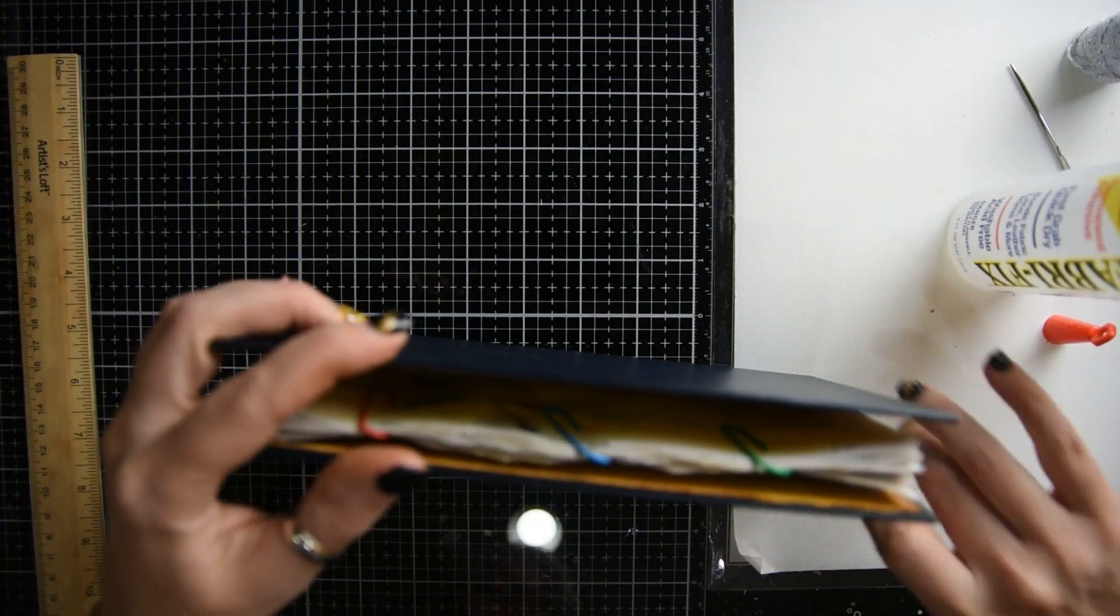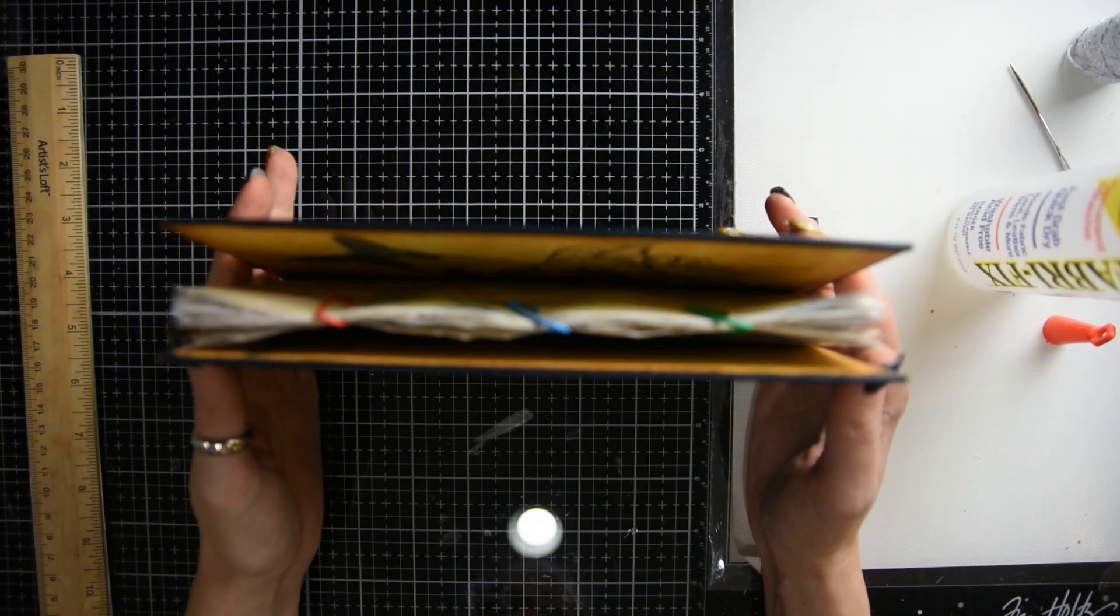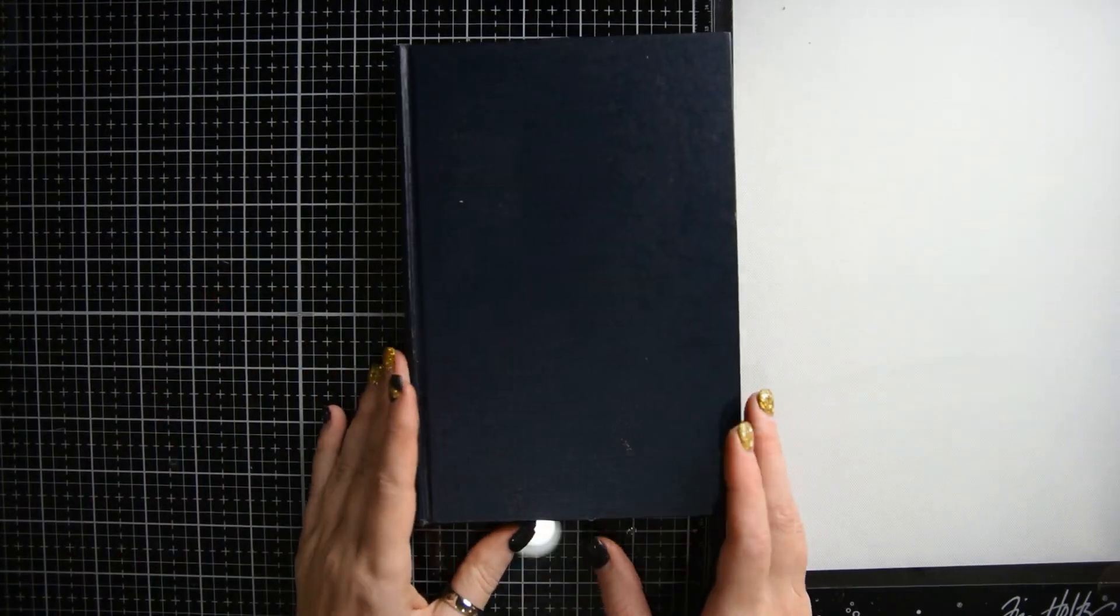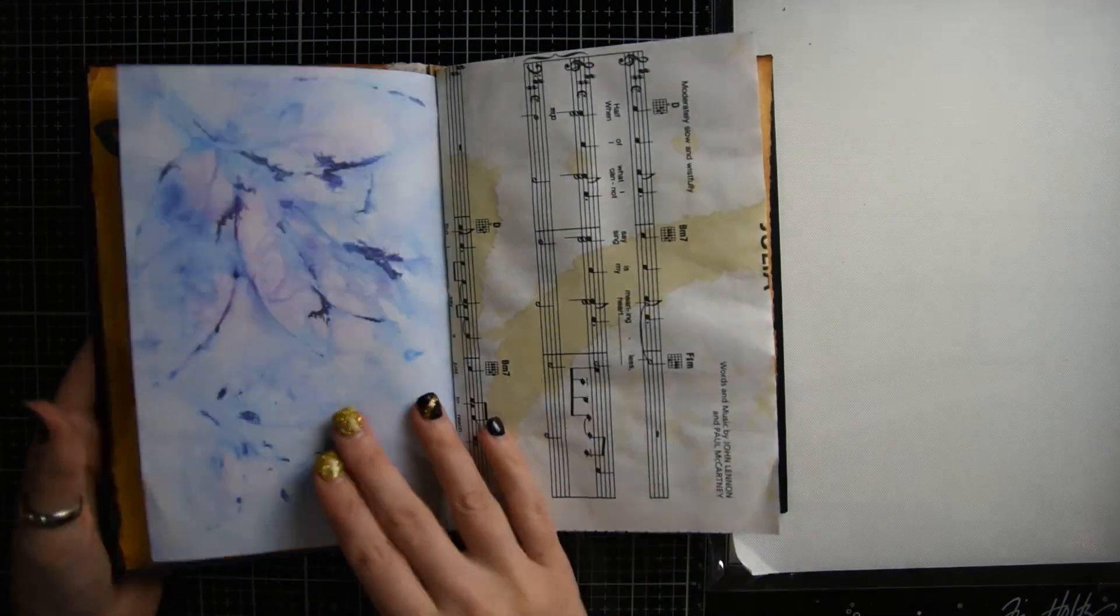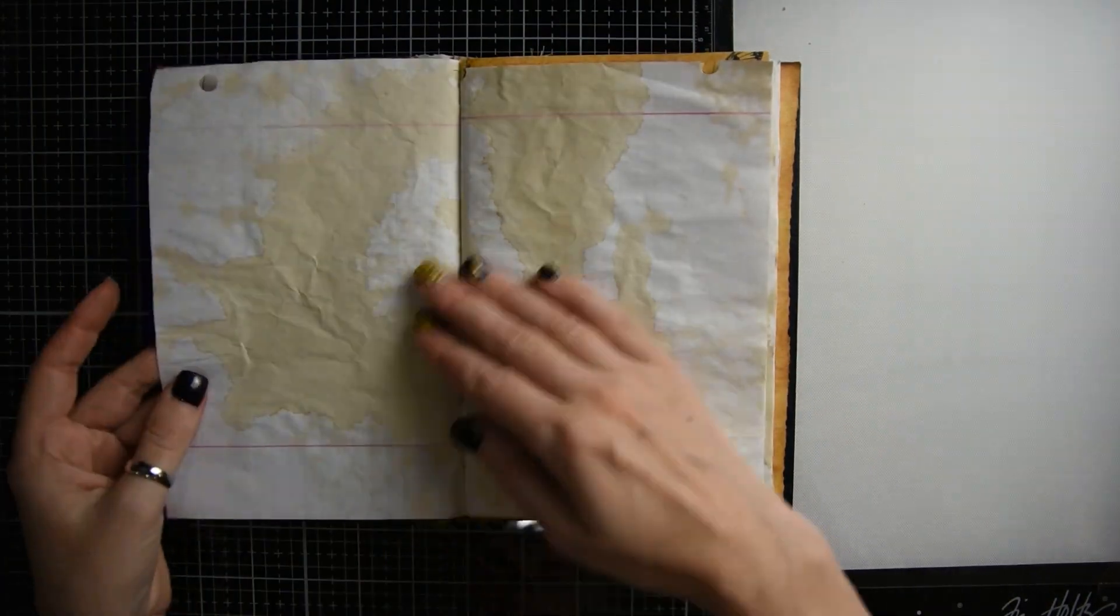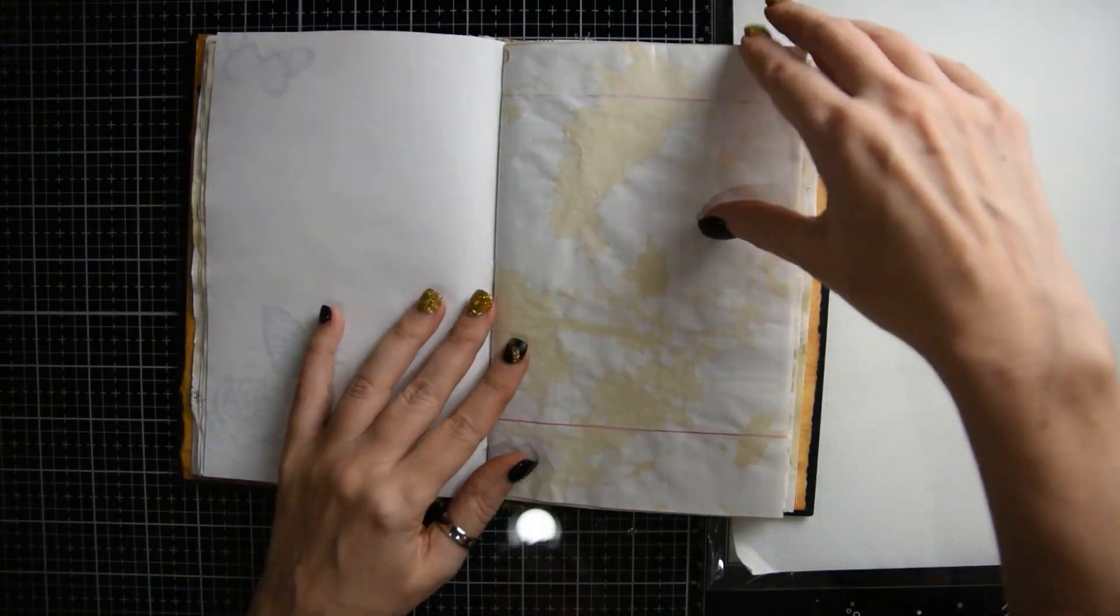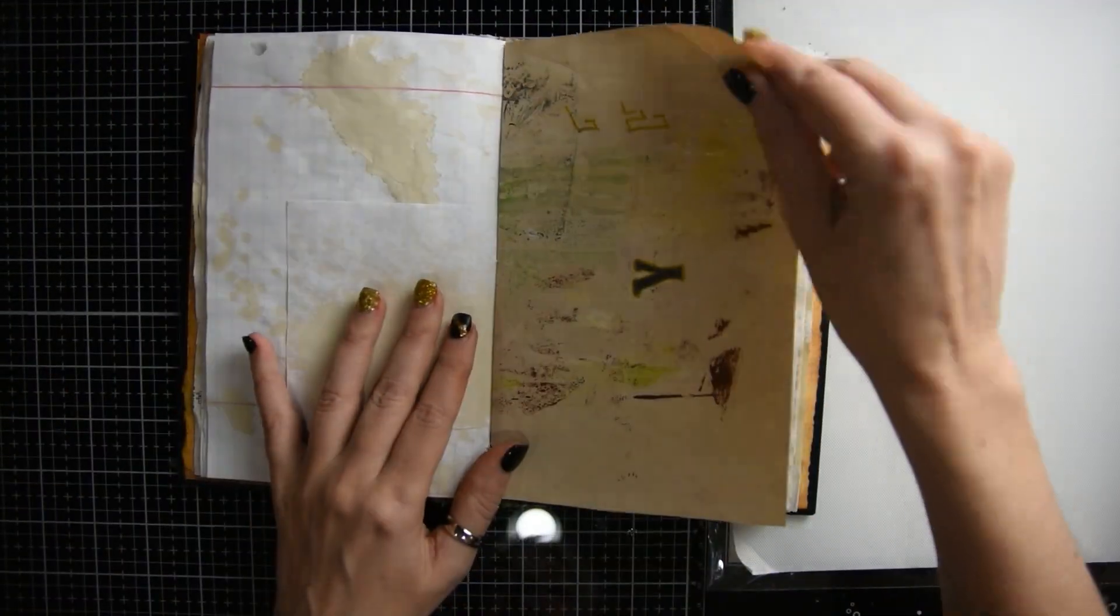And then voila, you have an altered book junk journal. And these are the pages I used. I just used some coffee-dyed lined paper and some coffee-dyed paper, some sheet music, some scraps, just to make this fun little altered book.